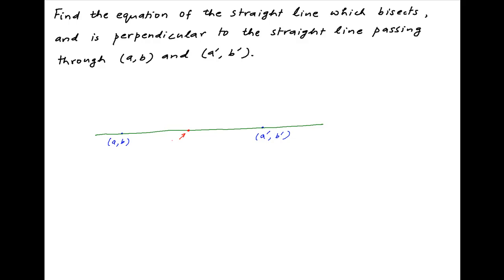Note that the coordinates of the midpoint of the two given points are (a + a')/2, (b + b')/2. Also, the gradient of the line joining these two given points is equal to (b' - b) / (a' - a).